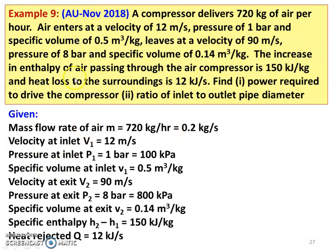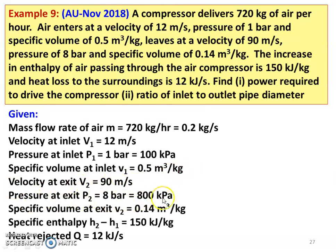Writing down the given data: mass flow rate M = 720 kg/hr = 0.2 kg/s. Velocity at inlet V1 = 12 m/s. Pressure at inlet P1 = 1 bar = 100 kPa. Specific volume at inlet = 0.5 m³/kg. Velocity at exit V2 = 90 m/s. Pressure at exit P2 = 8 bar = 800 kPa. Specific volume at exit = 0.14 m³/kg. Change in specific enthalpy H2 − H1 = 150 kJ/kg. Heat rejected Q = 12 kJ/s.